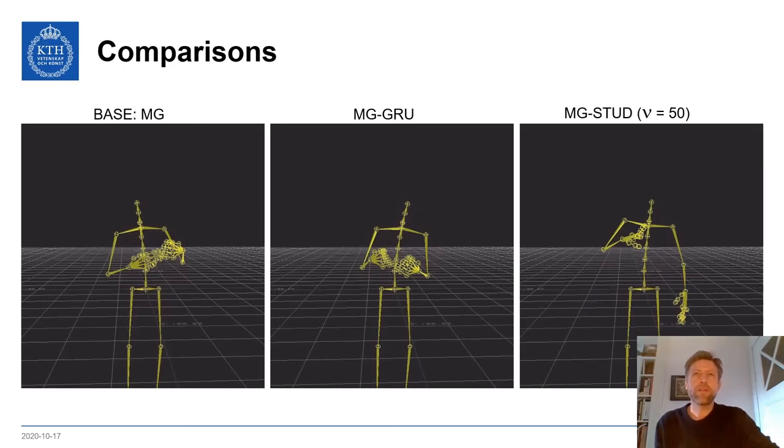Unfortunately, I did not have the time to perform a large scale study to assess the differences. Instead, I inspected random samples from the three systems to see if I could observe any salient patterns. My impression was that the base system and the studentizing systems were very similar and that the GRU system generated more artifacts and less varied gesticulation. I chose the base system for my challenge entry.